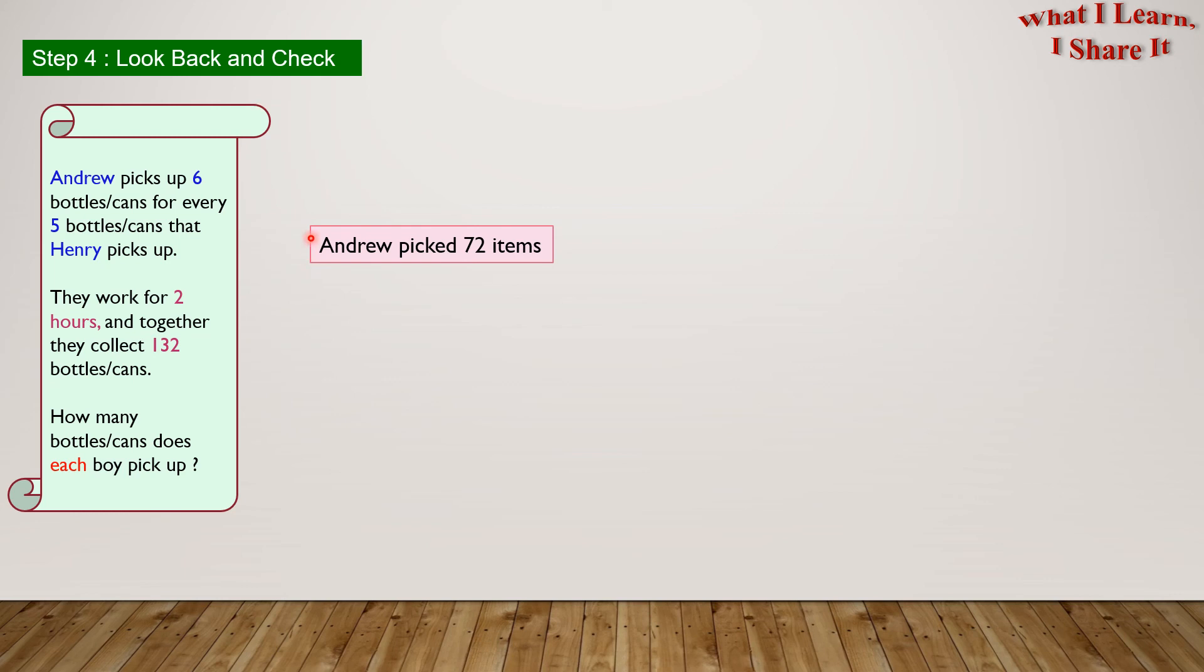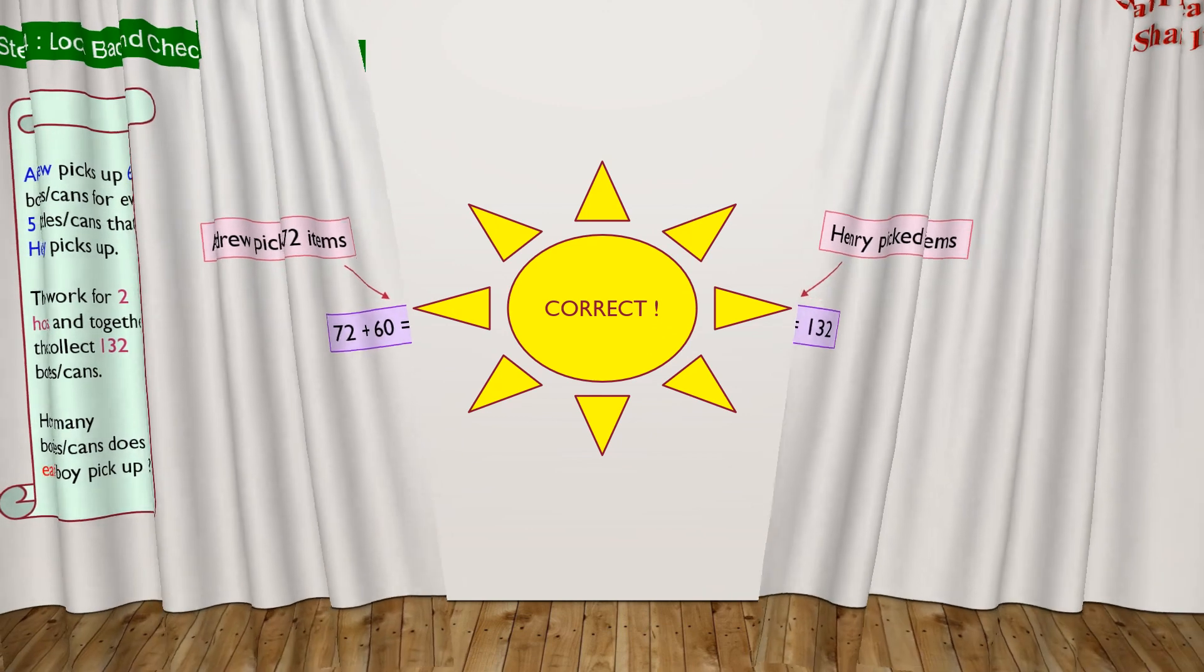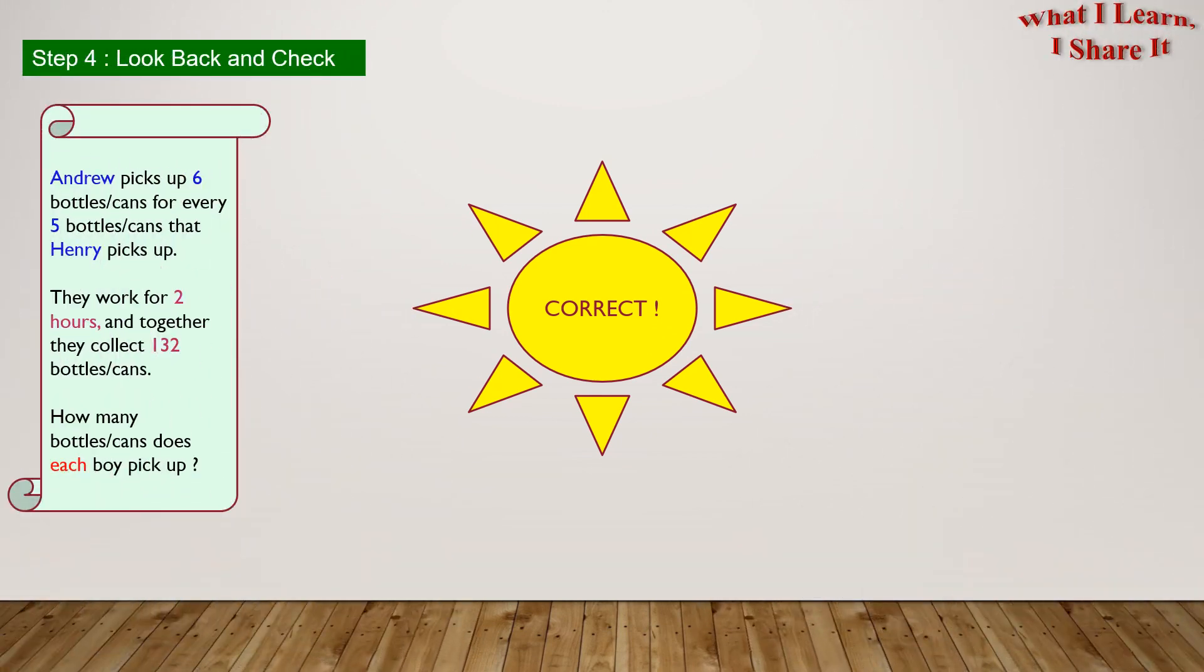Andrew picked 72 items, which we found previously. And Henry picked 60 items, which we found previously as well. Once we combine these two, we get 72 plus 60, which is 132. And this means our answer is correct! Yay! We solved the problem!